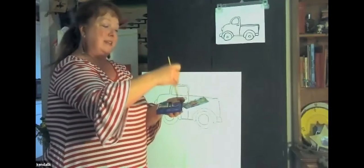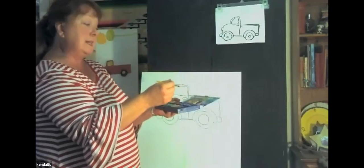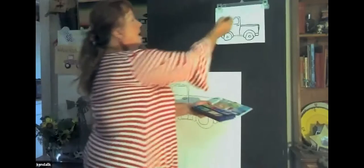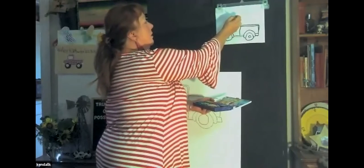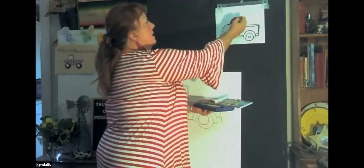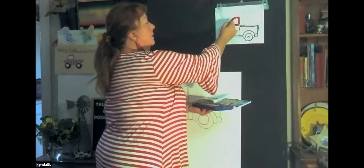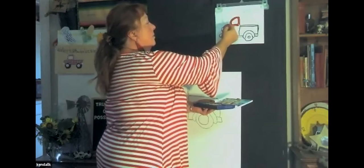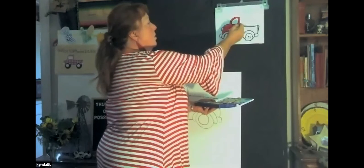I have my kids go over their lines with crayon for a couple of reasons: it reminds them how to draw the truck, it reminds them to stay focused, and for my little ones it builds up fine motor muscles — we're not getting nearly enough fine motor skill development now that we play with computers all the time. The crayon also acts as a fence to keep your paint in the right spot.